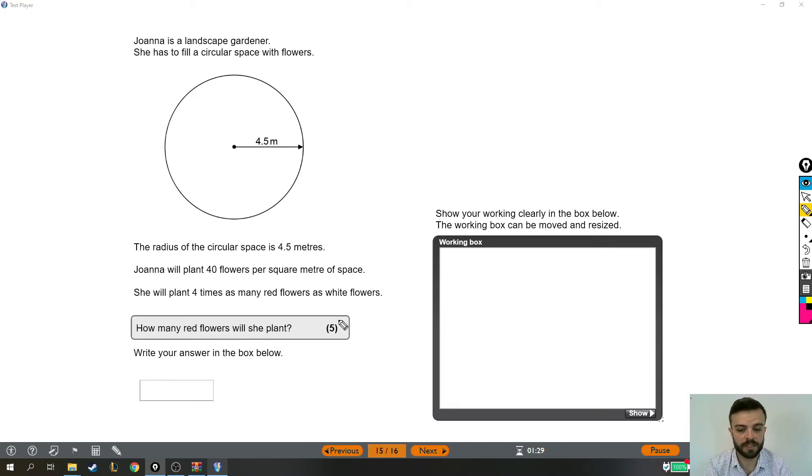So this is actually a really tough question because it's five marks and to get those marks you need to do some of the really tricky stuff that's on functional skills. But the first thing we need to know is the area of the circular space that she's going to fill with flowers. Now if it was a rectangle we would do base times height. If it was a triangle we'd do base times height divided by 2. But there's a very different formula for the area of a circle.